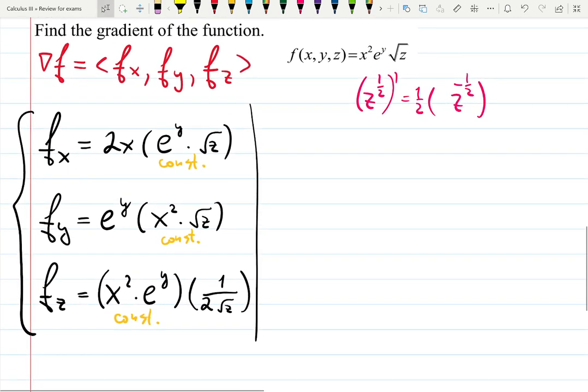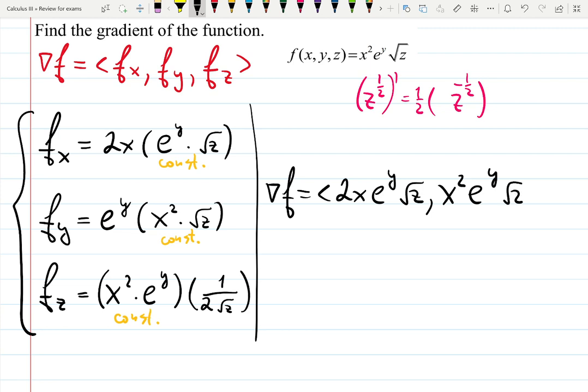So this builds a gradient vector. They don't even ask us to plug anything. So I will just write down the gradient vector will be, try to write down everything in order of x, y, z variables. So 2x goes first, e to the y square root of z, comma.